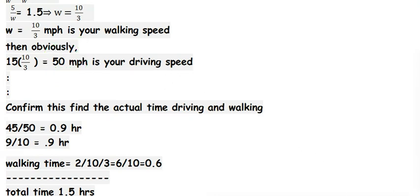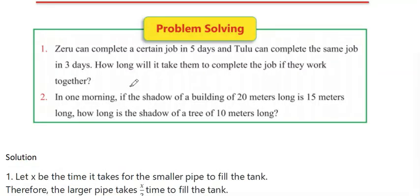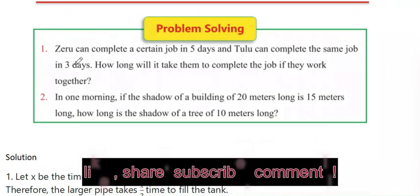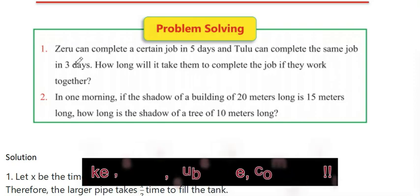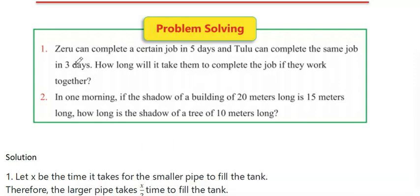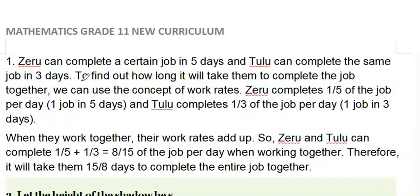Next, problem solving: Zero can complete a certain job in 5 days and To Look completes the same job in 3 days. How long will it take them to complete the job if they work together?